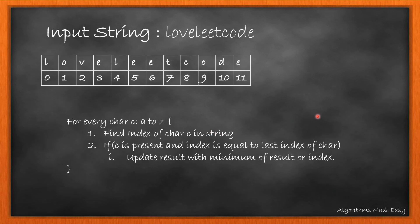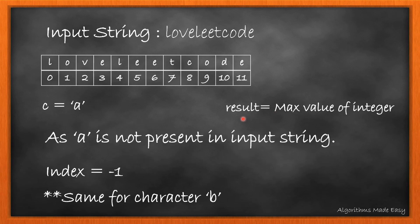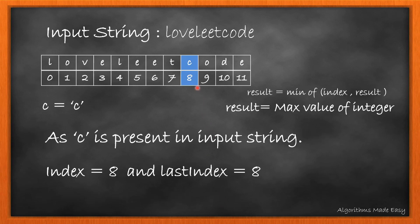Let's try it with the second example input and see how the result changes. We will first initialize our result with the maximum value of integer. Now we will start iterating from character A. As A is not present in the input string, the indexOf function will return minus 1 and thus we will not update the result. Same for character B. As C is present in the string at index 8, and its last index is also 8 as it appears only once, we update the result variable with the minimum of index and result. The minimum value is 8.